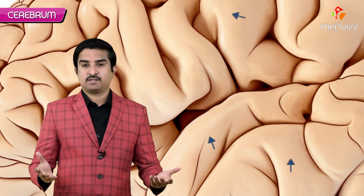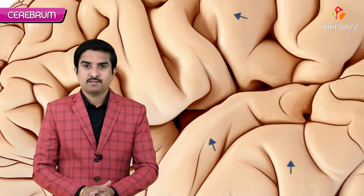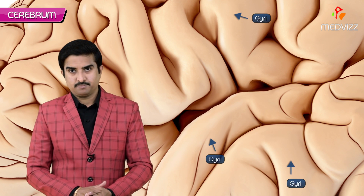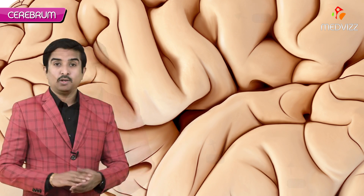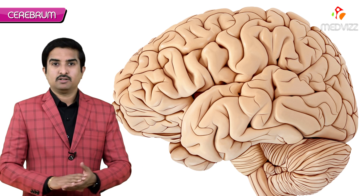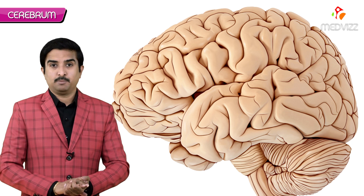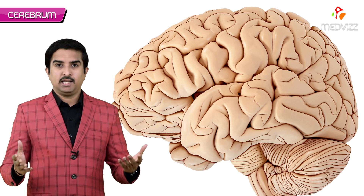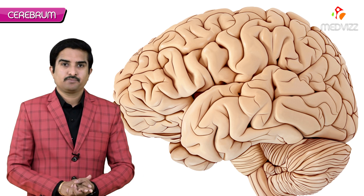The surface of the cerebral hemisphere is divided by grooves called sulci and into ridges called gyri. Now let us talk about the division of the cerebral hemisphere according to the lobes.